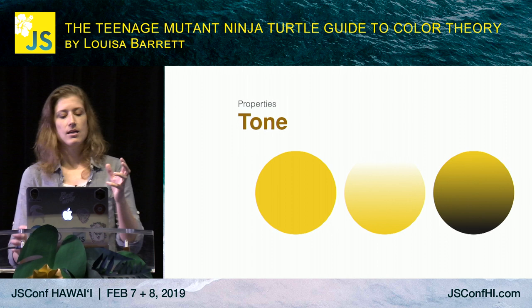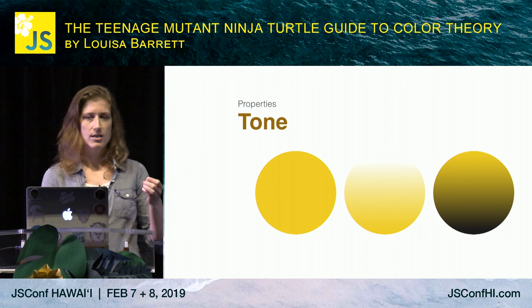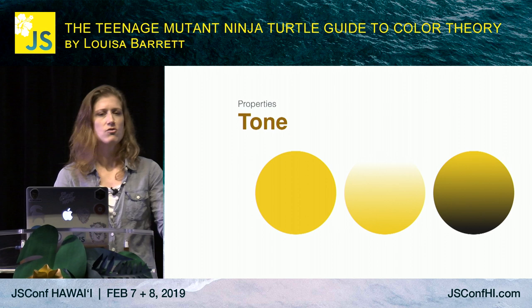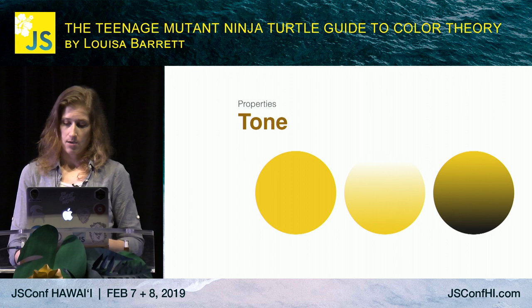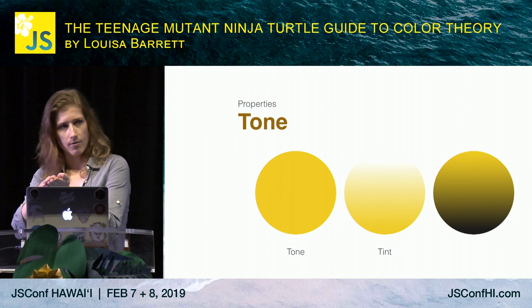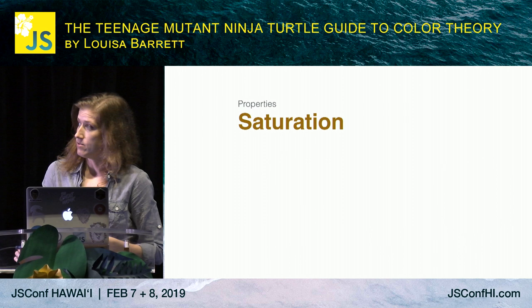Then we have tone. Tones are made by mixing a pure color with a neutral or grayscale color — for this talk, white and black. A tone will be a little bit softer than the original color, creating a range within a color. If you have a complementary color combination that's a little too intense, you could work with tones to soften one of those colors. Within tones, we have tints — adding white to go towards a lighter color — and shades — adding black to go down towards a really dark color.